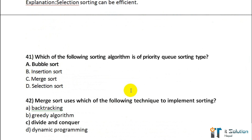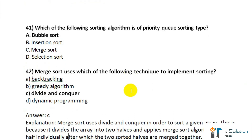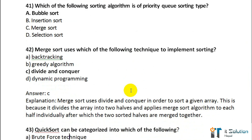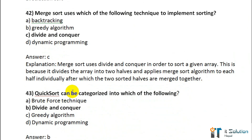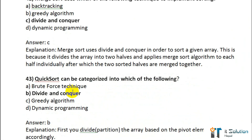Question number 42: Merge sort uses which of the following techniques to implement sorting? Its correct answer is option C — divide and conquer. Question number 43: Quick sort can be categorized into which of the following? Its correct answer is option B — divide and conquer.